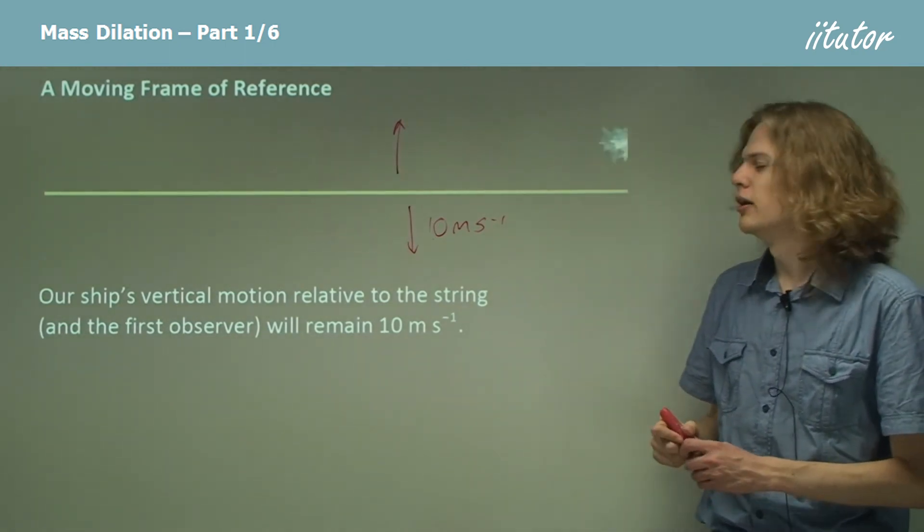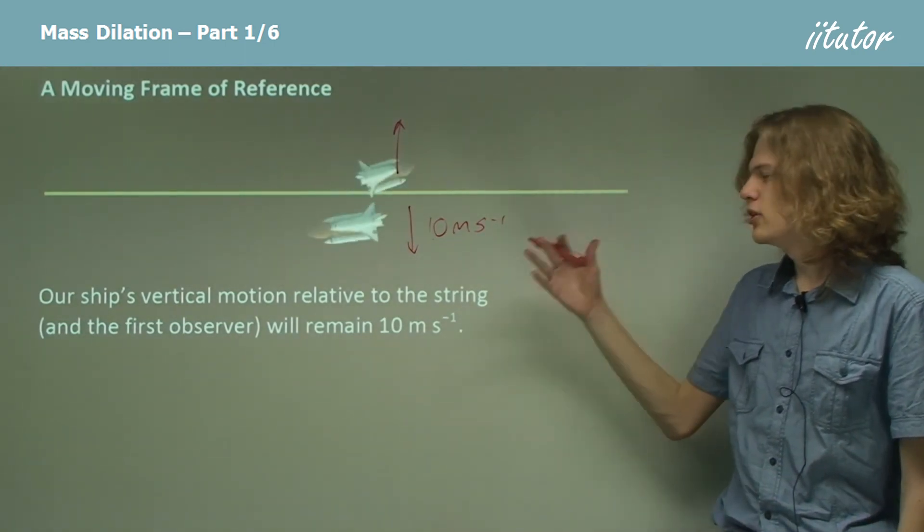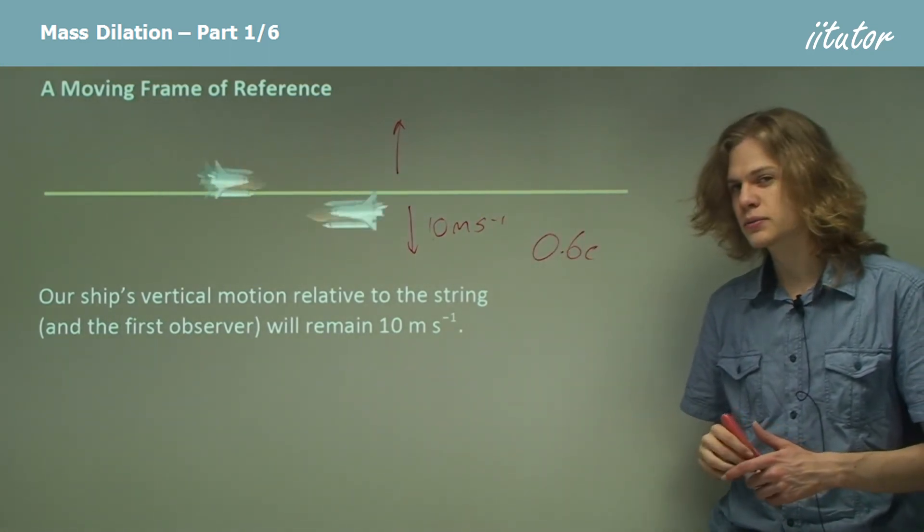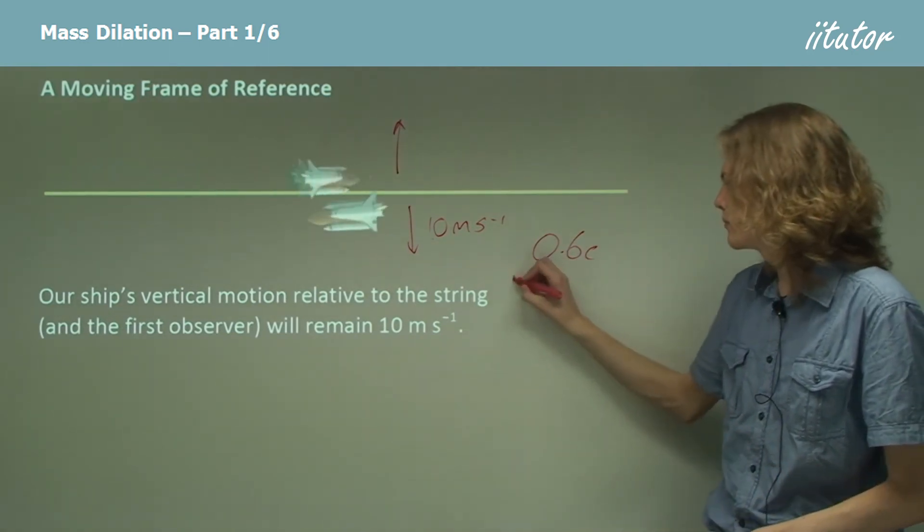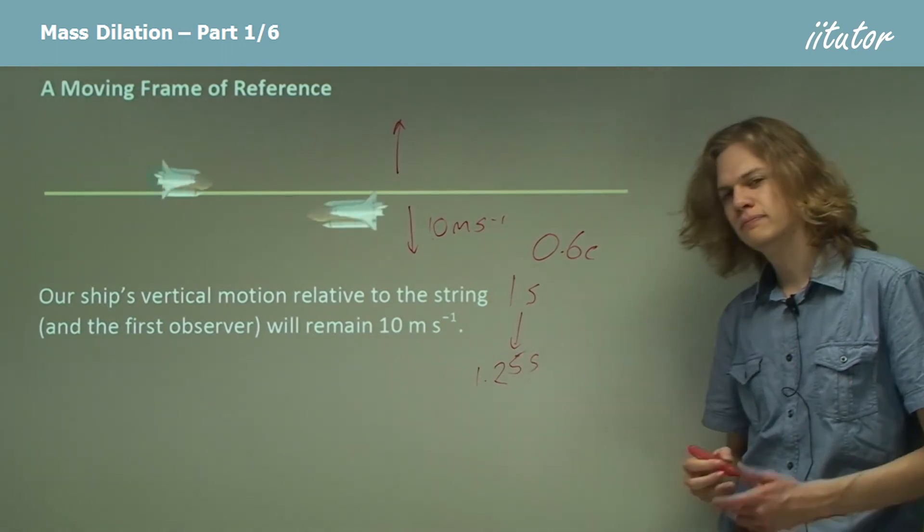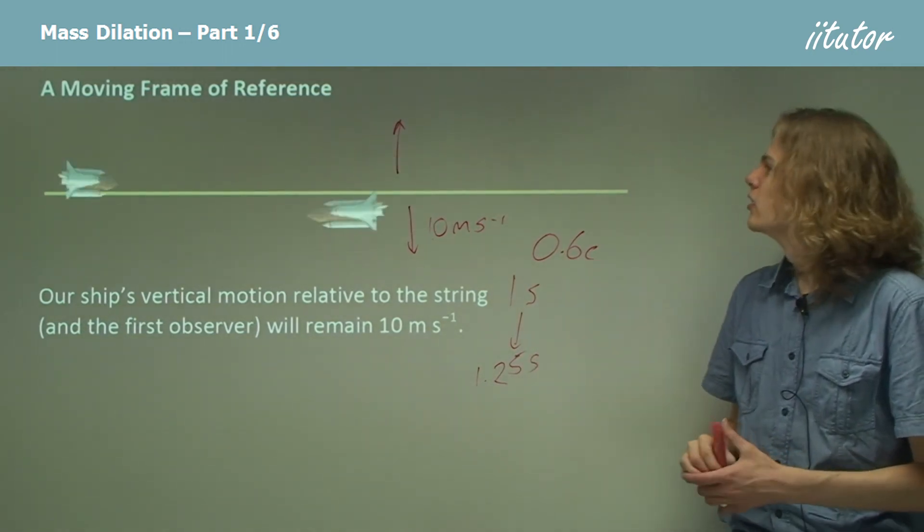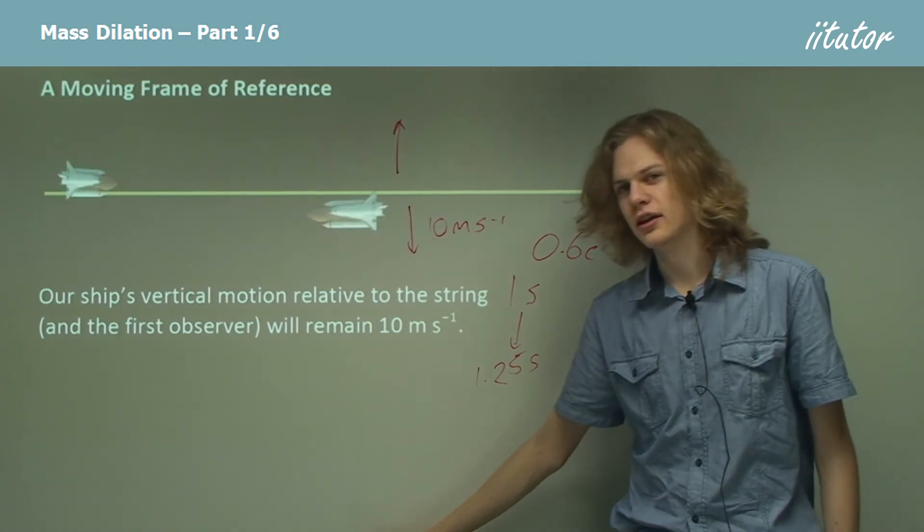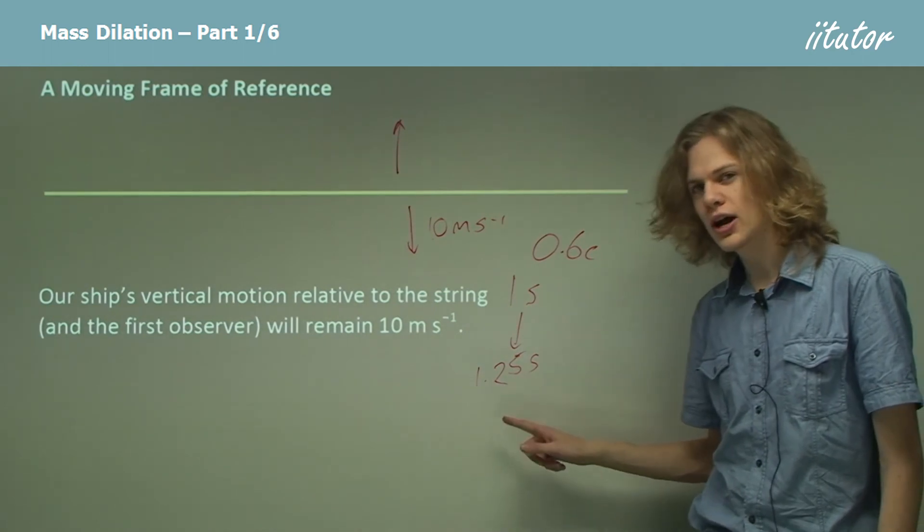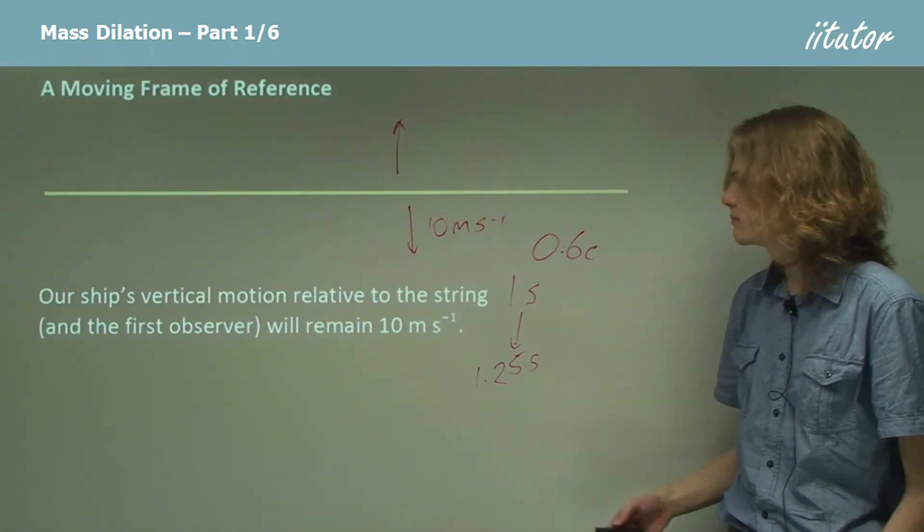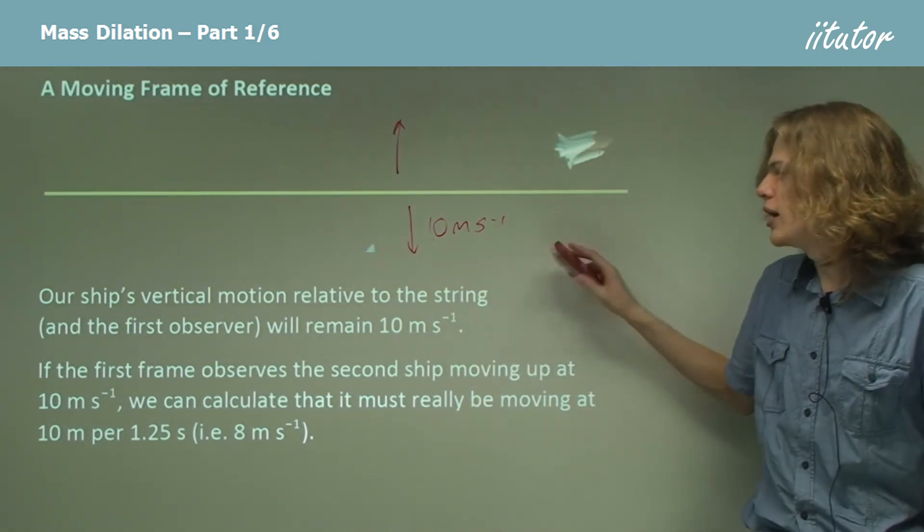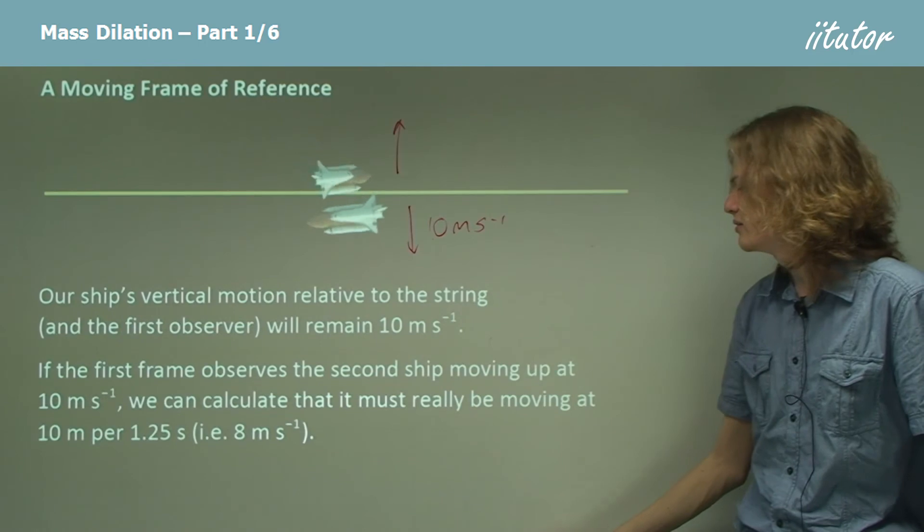Well, we can use time dilation. So if the observer is moving at 0.6 c relative to us, then one of their seconds turns into 1.25 seconds. So this ship isn't moving up at 10 meters per second, it's moving up at 10 meters per 1.25 seconds. And, of course, 10 divided by 1.25 gives us 8 meters per second.